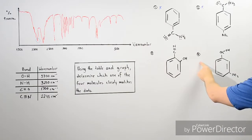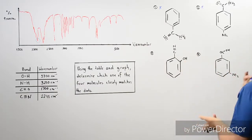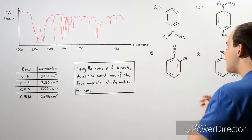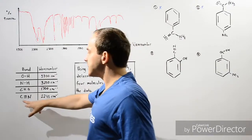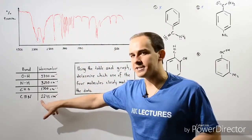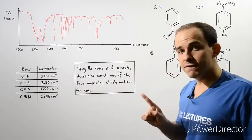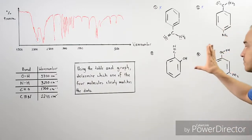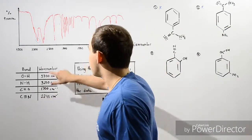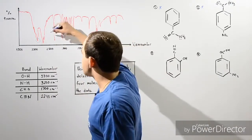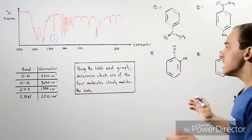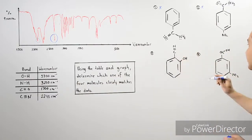We now know it is either molecule 3 or molecule 4. The main difference between these two is the C≡N triple bond — molecule 3 contains it and molecule 4 does not. This bond has a wave number of about 2240. Looking at the graph at wave number 2240, we see there is indeed a dip at that specific wave number, which corresponds to this particular chemical bond. That means our molecule must contain this triple bond, so the molecule that closely matches this infrared spectroscopy graph is molecule 3.